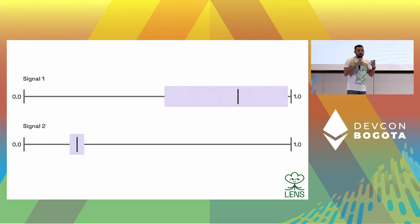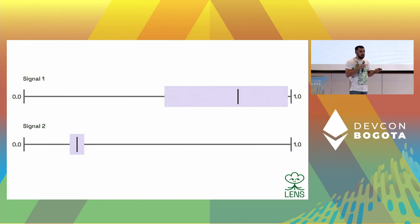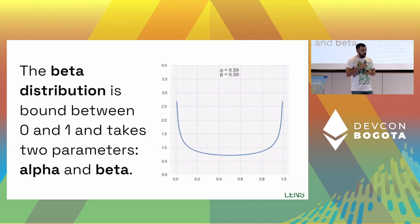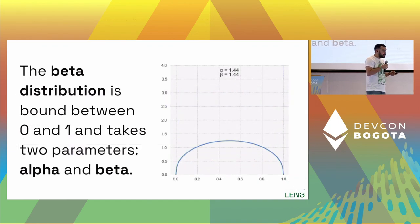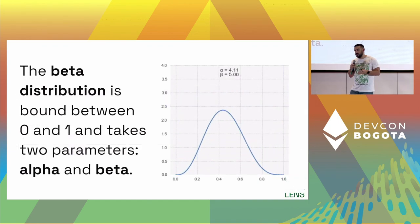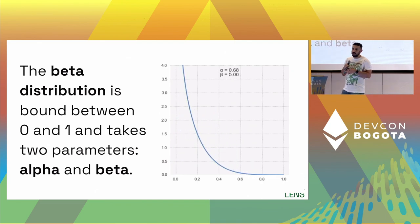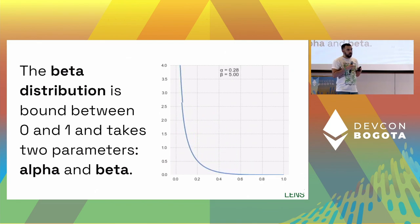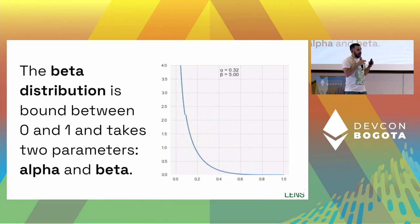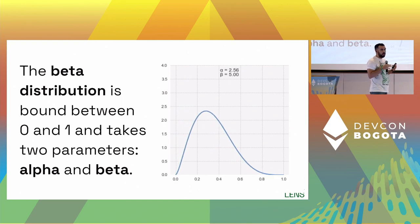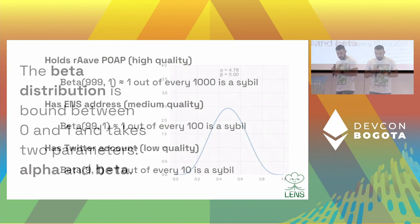Part of the answer is that you have to represent these as beta distributions. A beta distribution is just a kind of statistical distribution which is bounded between 0 and 1 and takes two parameters: alpha and beta. I'll explain what these parameters mean in a moment.